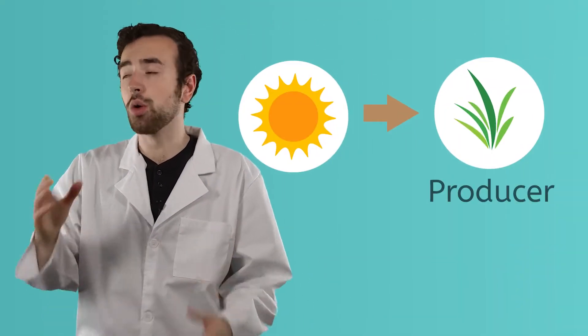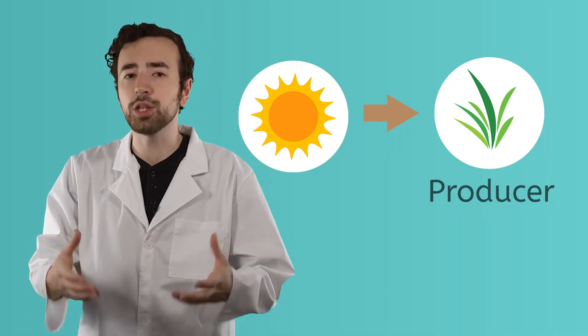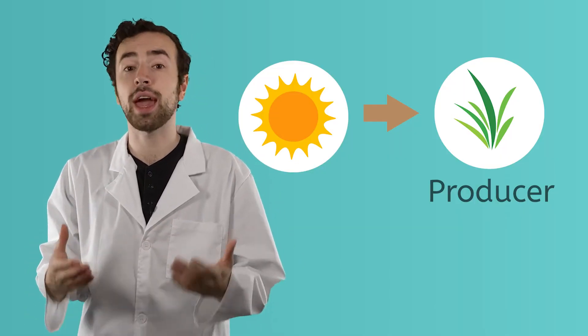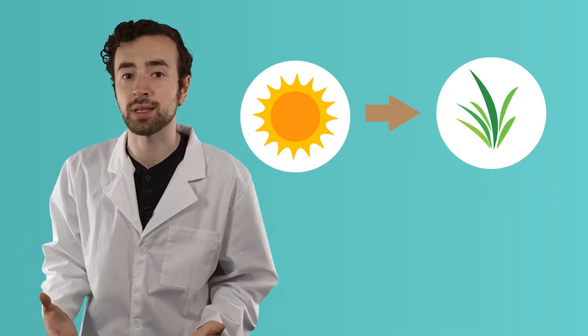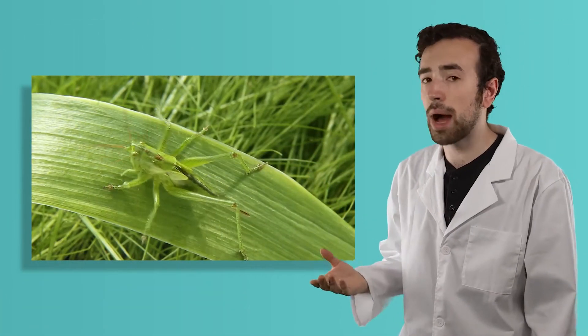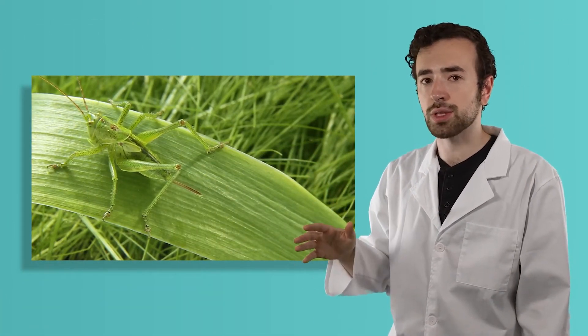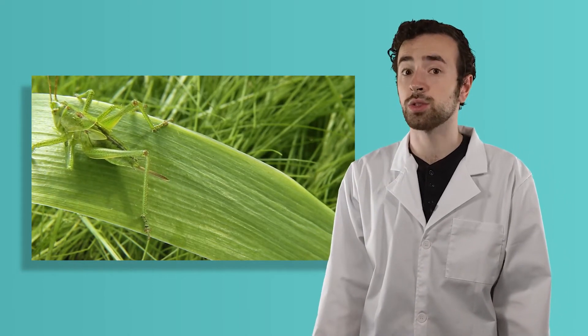Producers are always at the start of a food chain, and they continually replenish the ecosystem with energy through photosynthesis. The energy created by producers moves through the ecosystem when plants are eaten by consumers.